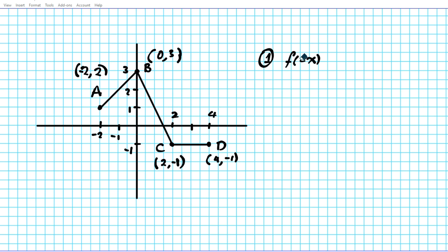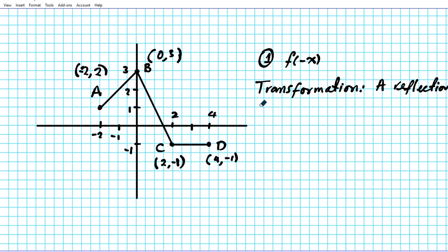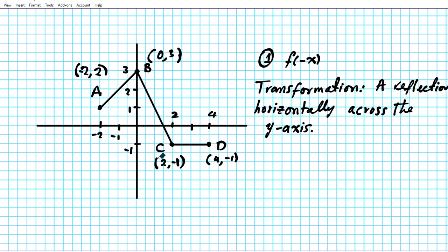So what kind of transformation does f of negative x have on f of x? The transformation is a reflection — a reflection horizontally across the y-axis. This requires whatever part of the graph is to the right of the y-axis to be reflected to the left side, and whatever portion is on the left side to be reflected to the right. Basically our y-axis is our mirror of reflection.